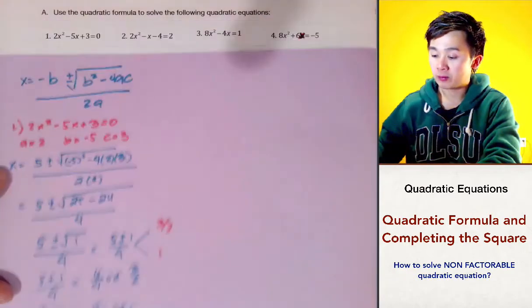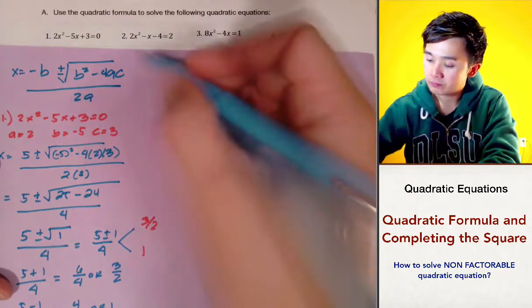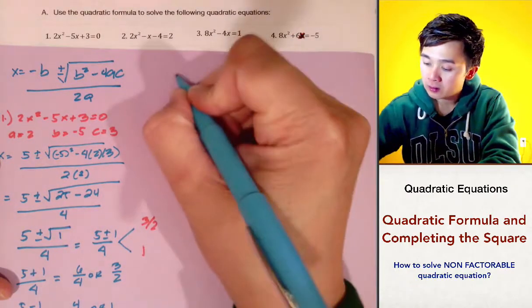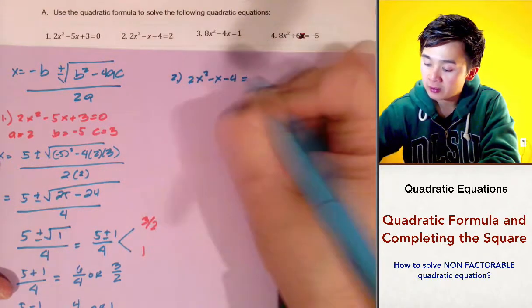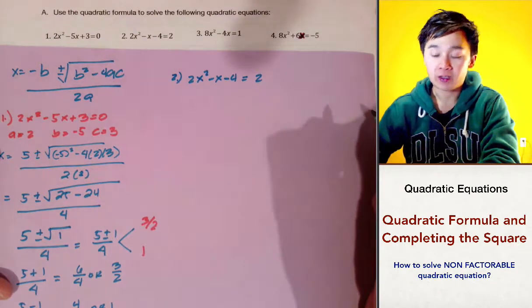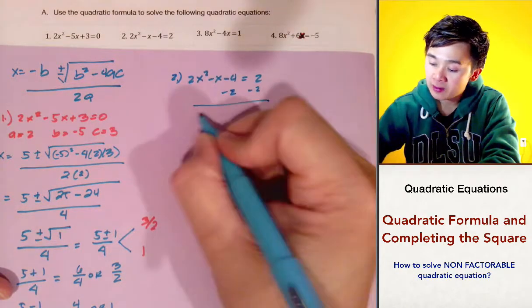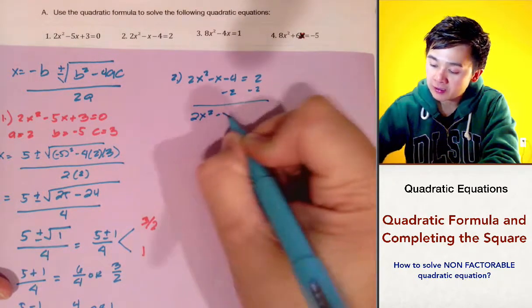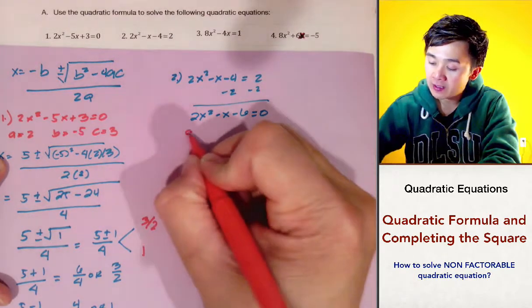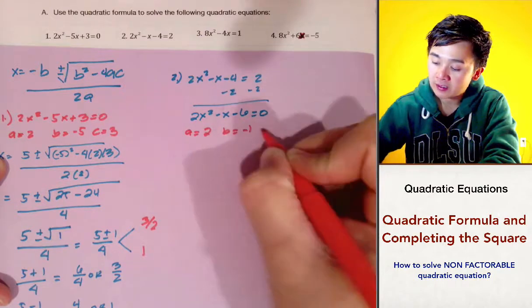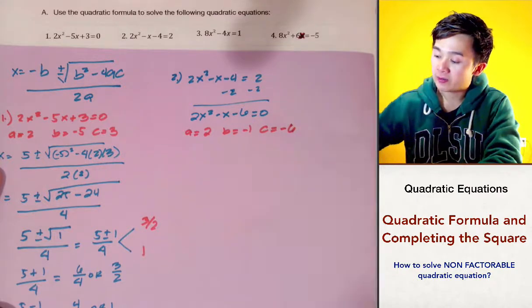Now let's answer problem number 2 using the same method. We have 2x squared minus x minus 4 equal to 2. First we need to equate this to 0 by subtracting 2 on both sides, leaving us with 2x squared minus x minus 6 equal to 0. In this case, a is equal to 2, b is negative 1, and c is negative 6.